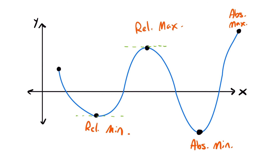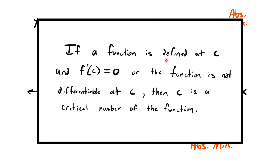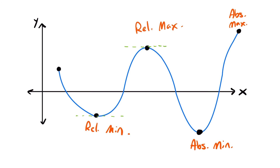Everywhere we have a relative max or min where slope equals 0, we call the x-value of those points critical numbers. A critical number is defined as follows: if a function is defined at some point C, and the derivative at that point equals 0, or the function is not differentiable at C, then C is a critical number of the function. To find extrema without graphing, we find critical values by setting the derivative equal to 0 and solving for x.